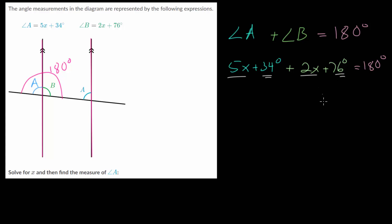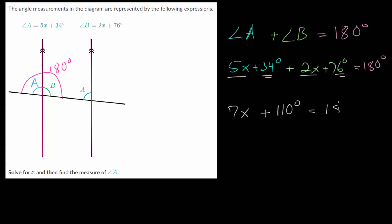Now we solve by combining like terms. Combining the variable terms: 5x plus 2x is 7x. For the constants: 34 plus 76 — 30 plus 70 is 100, and 4 plus 6 is 10 — so that gives us plus 110 degrees. So we get 7x plus 110 degrees equals 180 degrees.